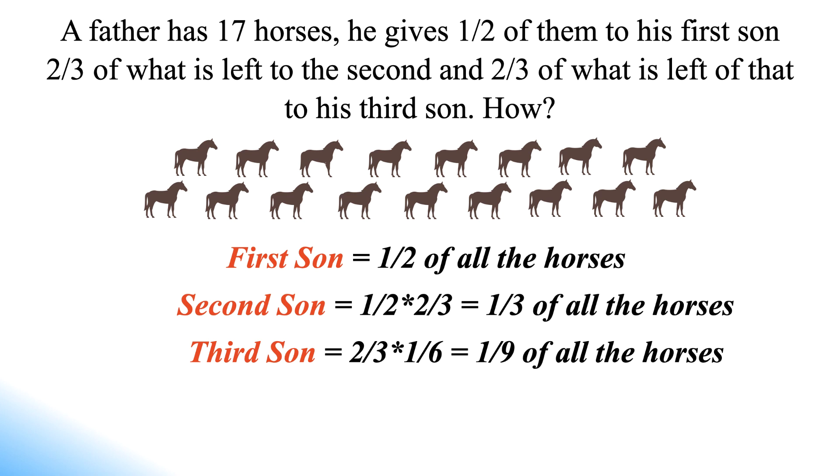And which leaves one-eighteenth of all the horses undistributed. Working under the assumption that all of the horses were meant to be given to the brothers, we can ignore that one-eighteenth and just compare the relative amounts that the brothers receive.